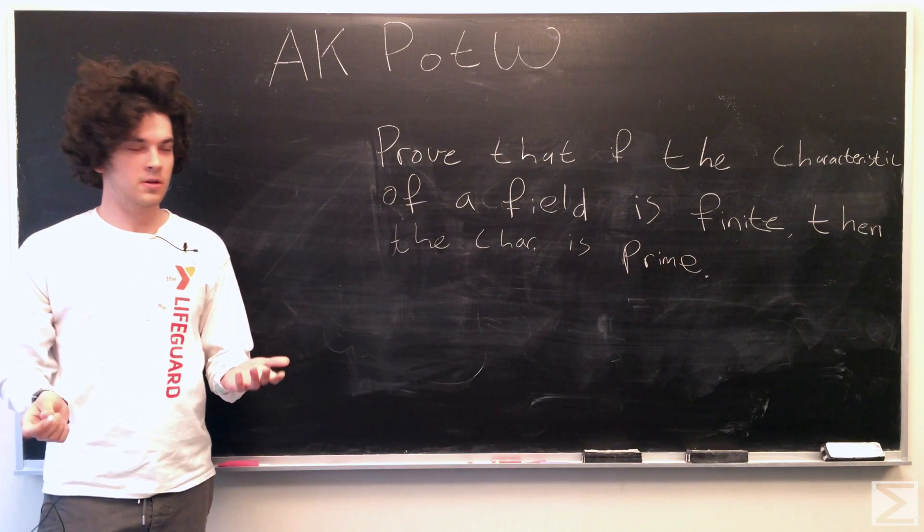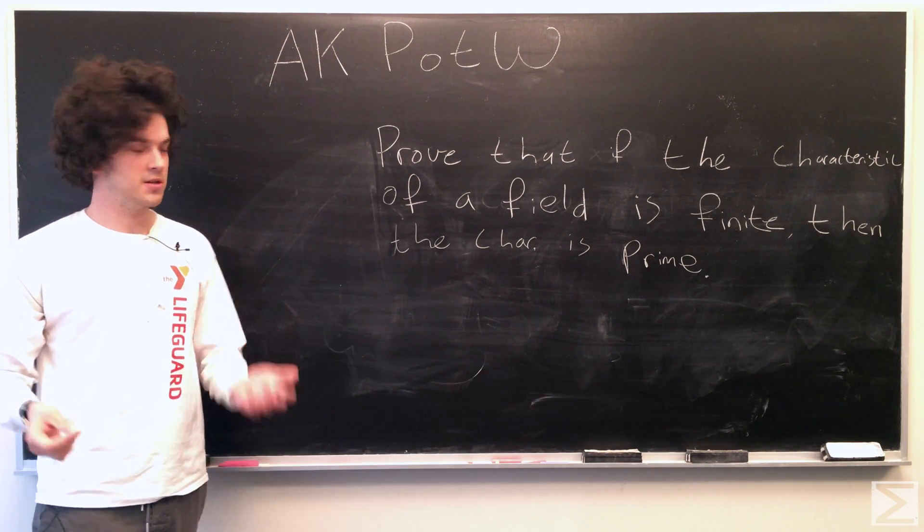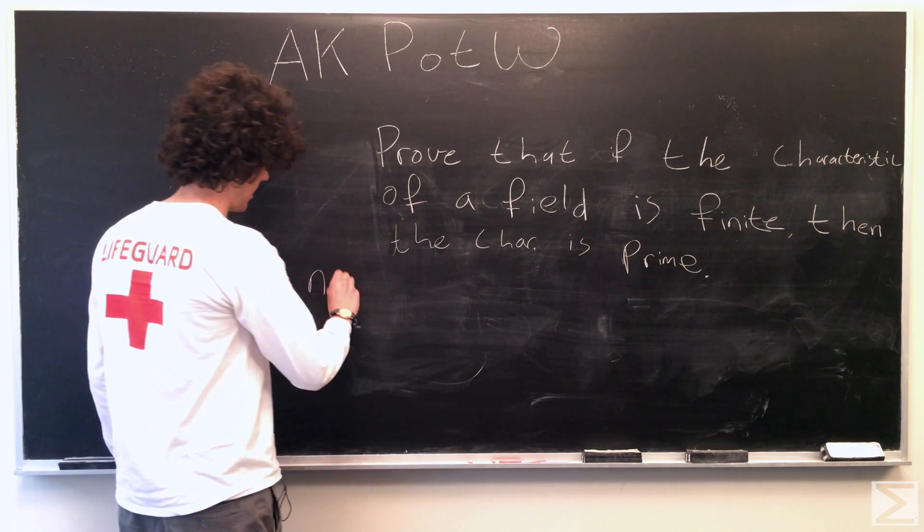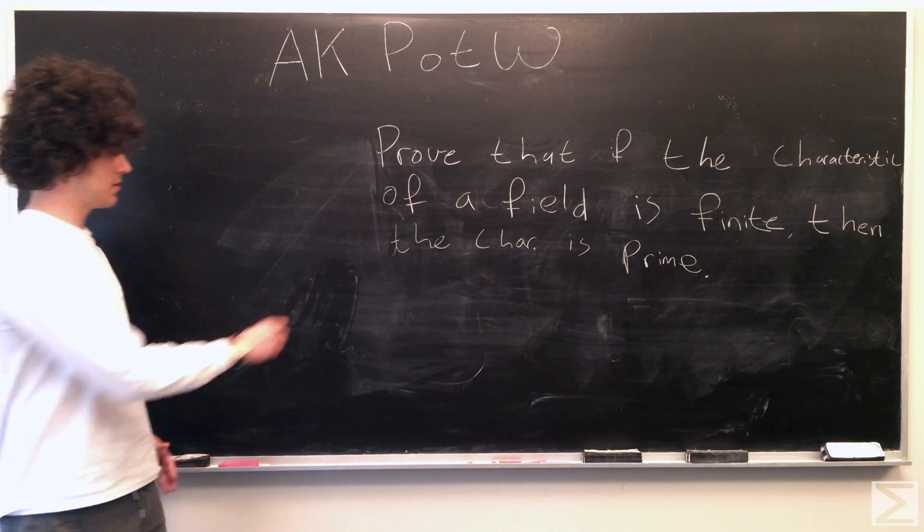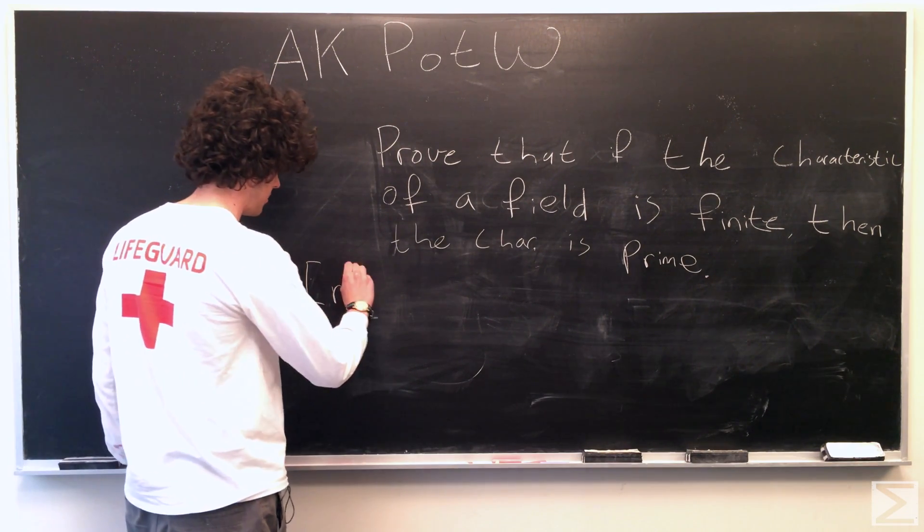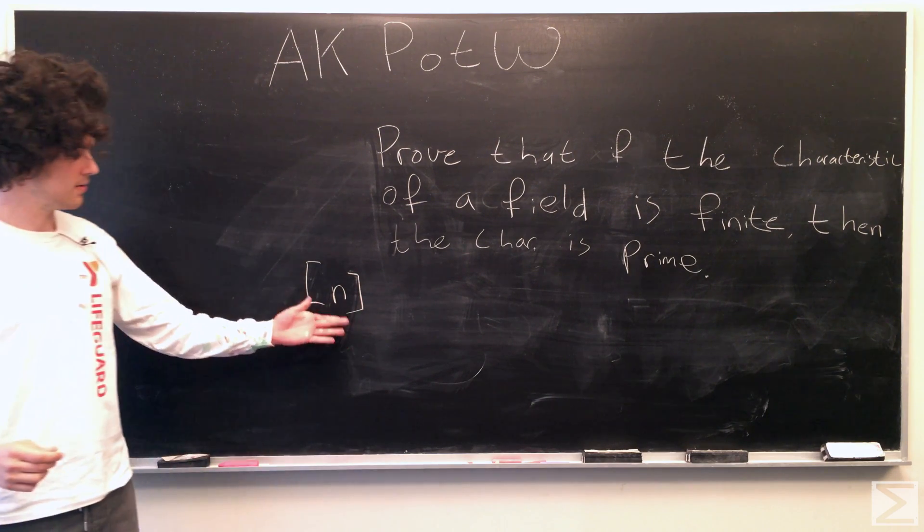So for notation, instead of writing n times one, like one n times, we're going to call this the characteristic number n.